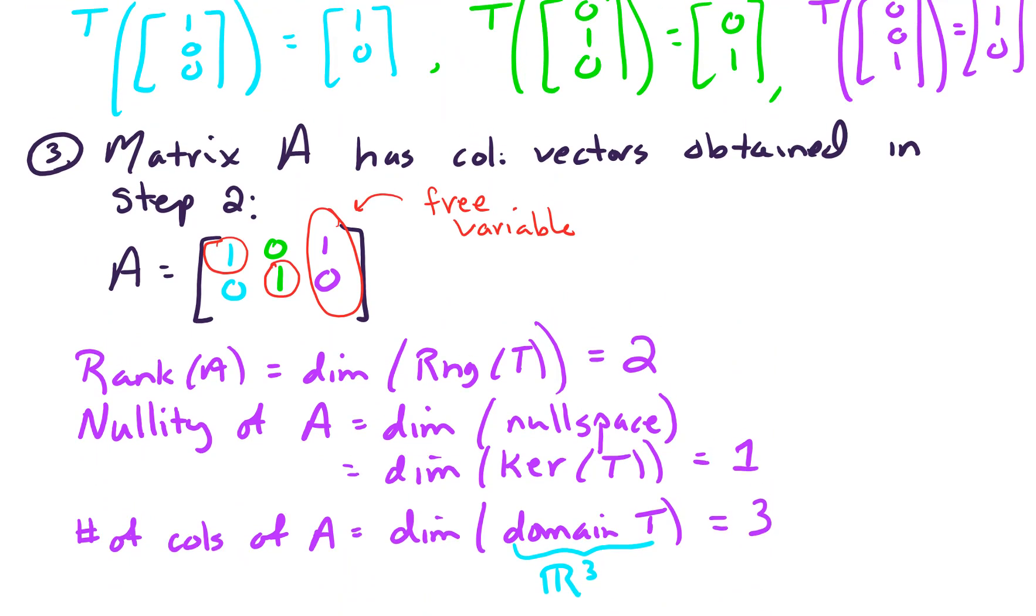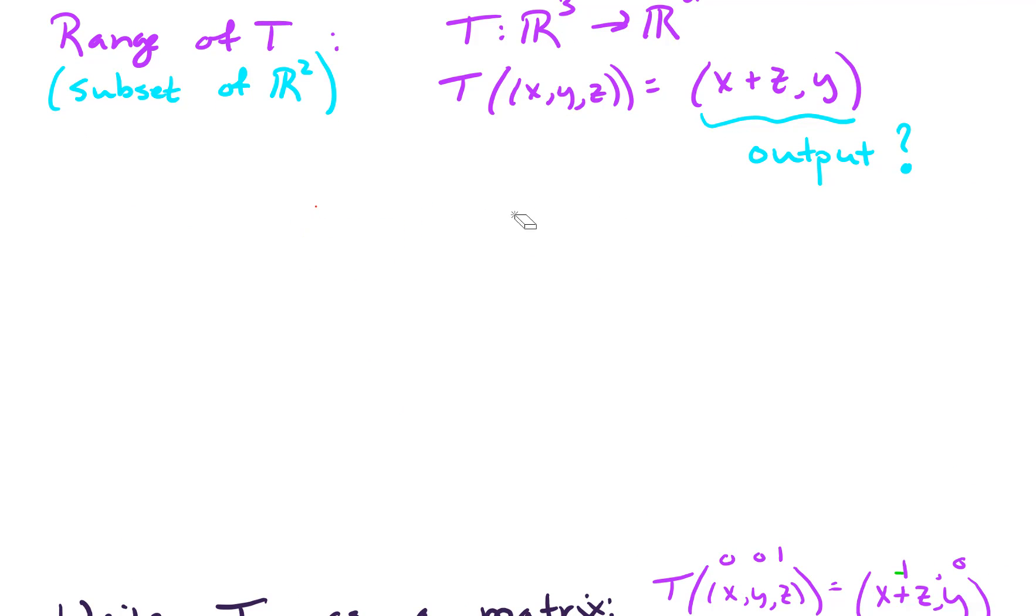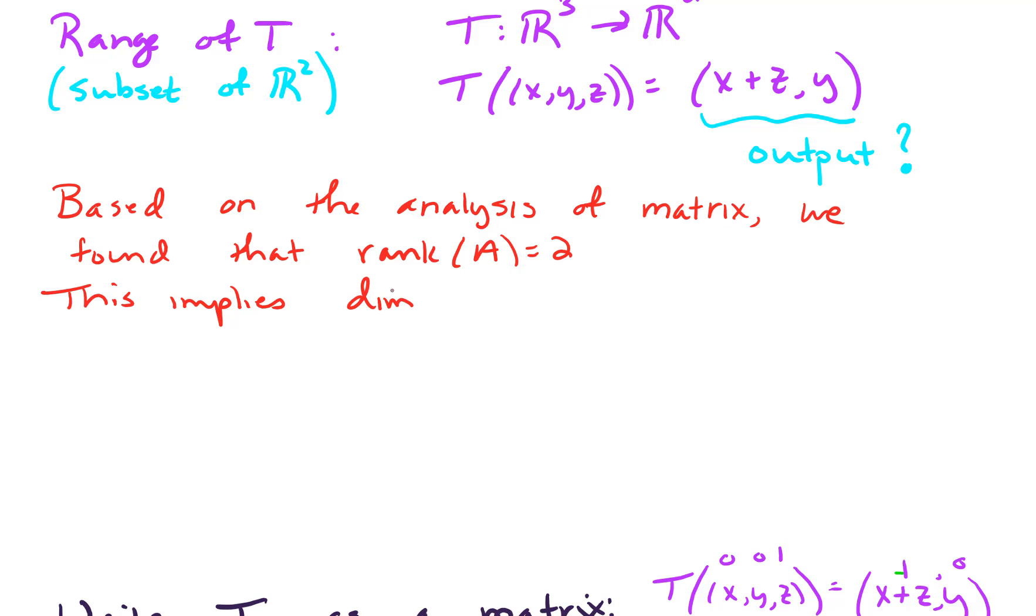Let's go back and answer the question we left off with above. We were wondering about the range of T, and we said we'd come back to this. Based on our analysis below, based on the analysis of matrix A, we found that the rank of A was 2. And that's the same as, so this implies that the dimension of the range of T is also 2. Those are the same things, the rank and the dimension of the range.